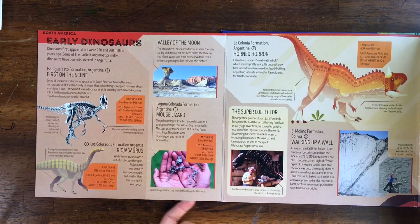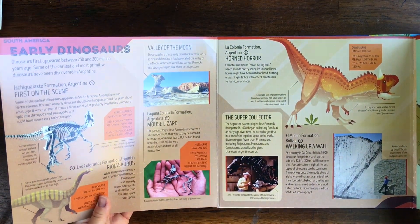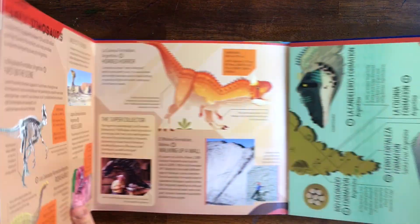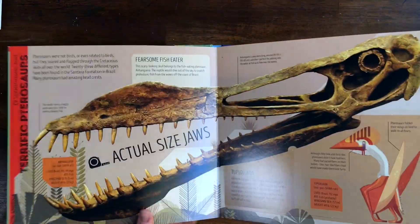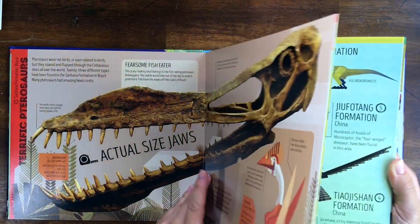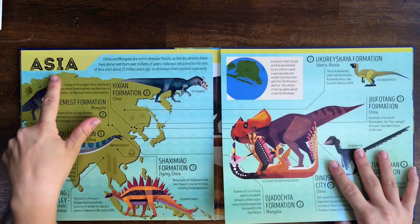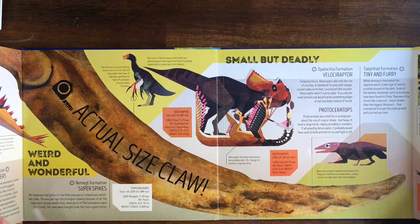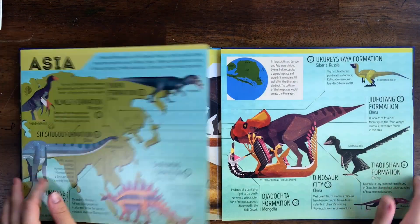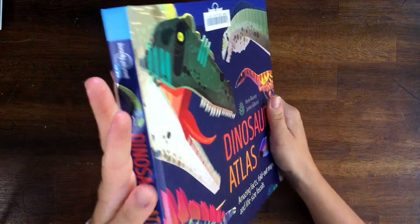Tiny fossil hatchling of a Mussaurus — so cool! I love how it goes through by continent too. This book is awesome. I'm going to have to get this one.